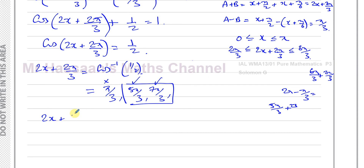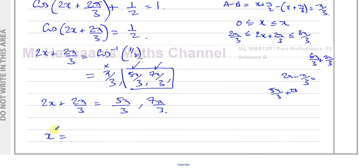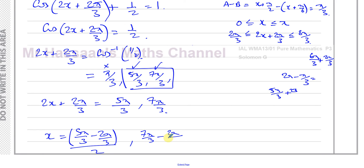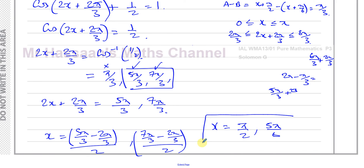Setting 2x + 2π/3 = 5π/3 and 7π/3 respectively. For the first: x = (5π/3 − 2π/3) / 2 = (3π/3) / 2 = π / 2. For the second: x = (7π/3 − 2π/3) / 2 = (5π/3) / 2 = 5π/6. So the two solutions are x = π/2 and x = 5π/6.